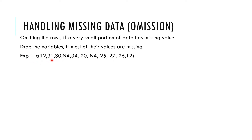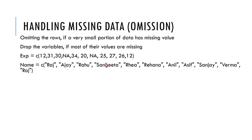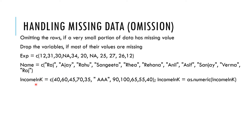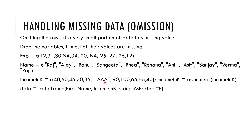Here is an example: 'exp' means experience, with values like 12, 31, 30 years, and NA as a missing value. Another variable is the employee name, and the third variable is income in thousands — like 40,000, 60,000, and so on. There's also a character value 'AAA' entered in what should be a numerical variable, which is a mismatch. We use as.numeric() to convert the variable to numeric, which causes R to turn the invalid entry into NA.